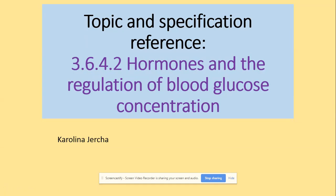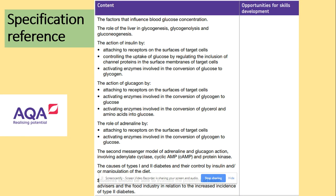Hi guys, welcome to my second video on the hormones and the regulation of the blood glucose concentration. In our first video, we were looking at the role of the liver and pancreas in the control of blood glucose concentration, and we also discussed the role of adrenaline and the second messenger. In this video, we are going to focus on insulin and glucagon.